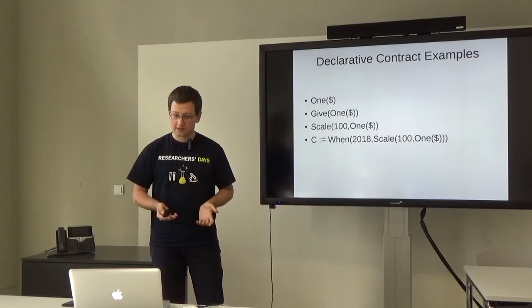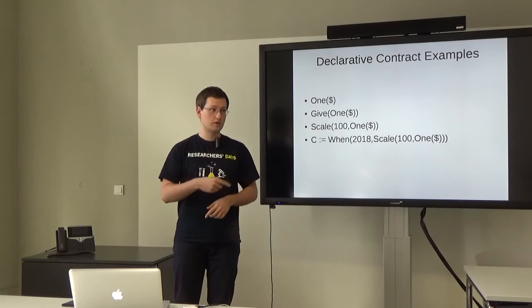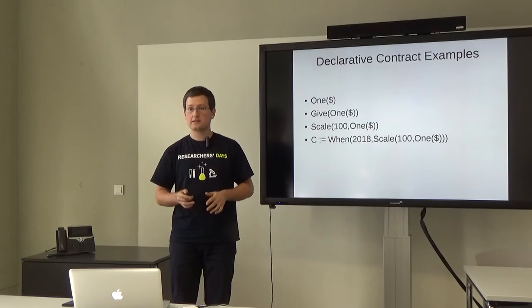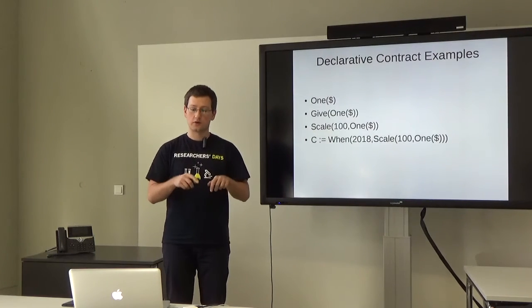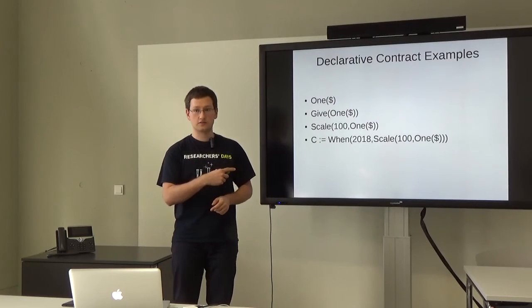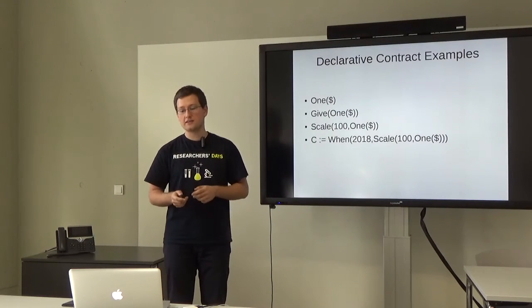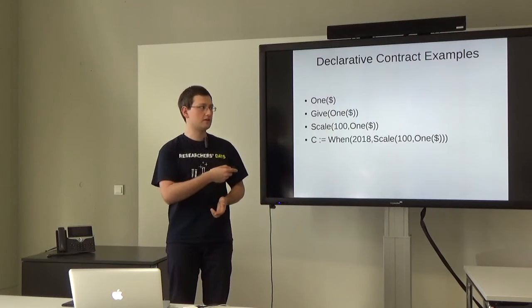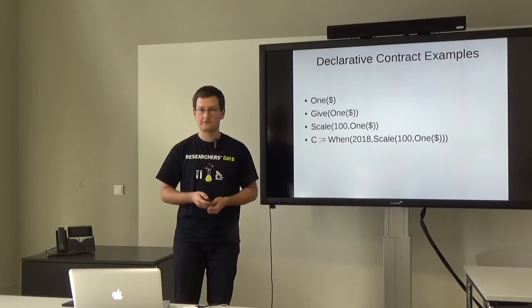More complicated example. We can, on top of what we have already built, we add a temporal clause and execute it only when the year is 2018. And we can give a name to this thing. We call it C to simplify the following.